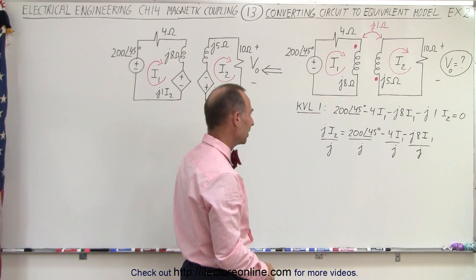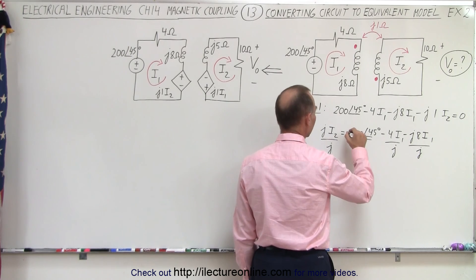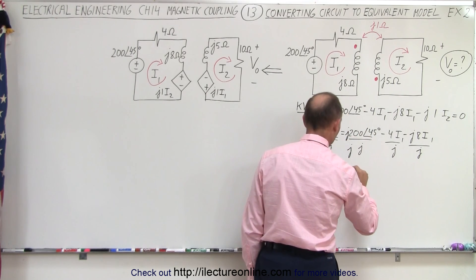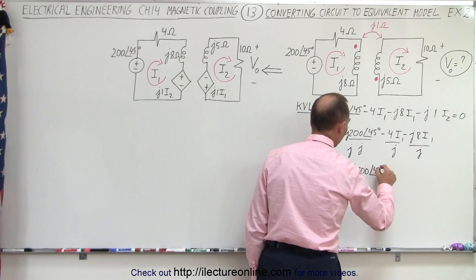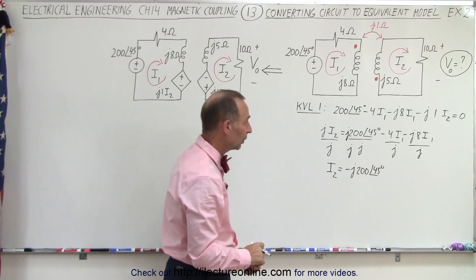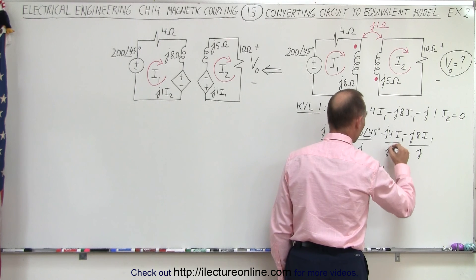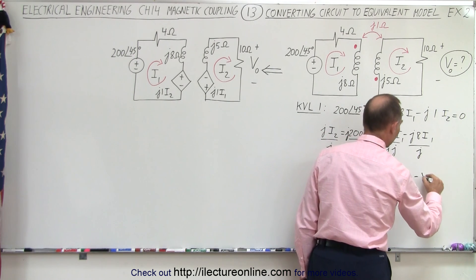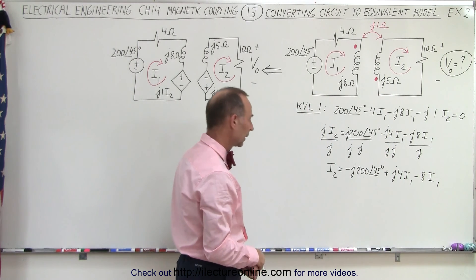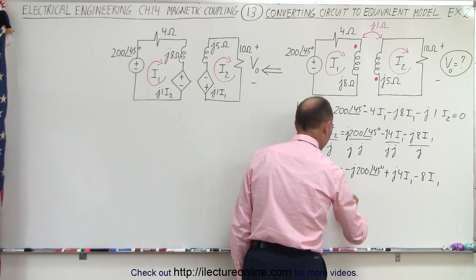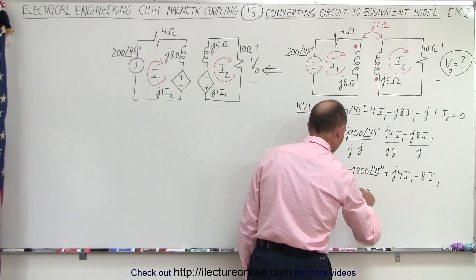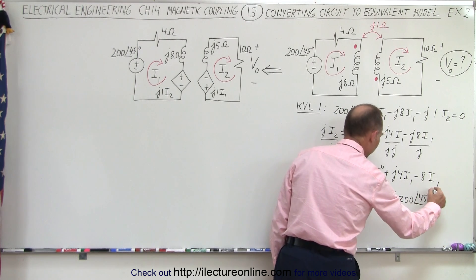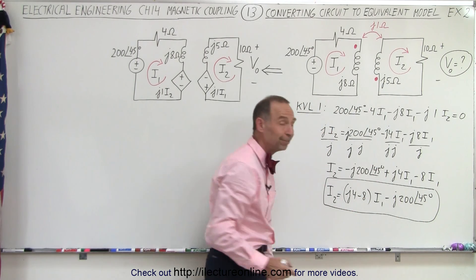The J's cancel on the left so we have I2. For the right side, multiplying top and bottom by J: J times J gives negative one, so we get negative J·200 at 45 degrees; keeping the phase angle along. For the I1 terms, multiplying top and bottom by J: negative one times negative gives positive, so plus J4·I1, and the J's cancel on the minus 8·I1 term. Therefore I2 equals (J4 − 8)·I1 − J·200∠45°.